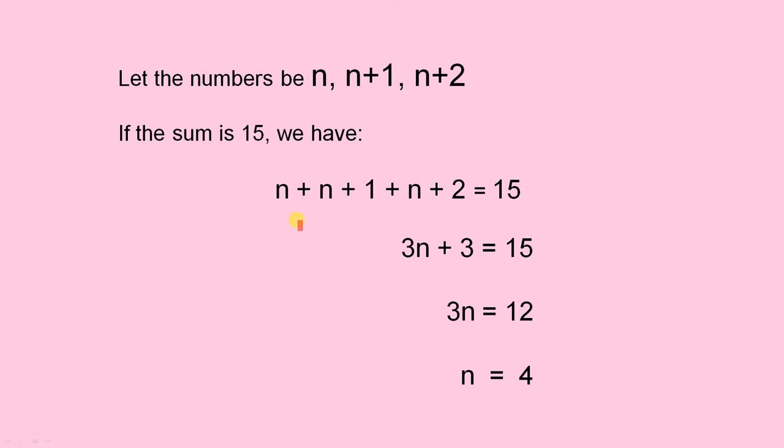If the sum is 15 we have n plus n plus 1 plus n plus 2 must be 15. If we add the like terms together we get 3n plus 3 equals 15. If we subtract 3 from both sides we get 3n equals 12. So n equals 4.